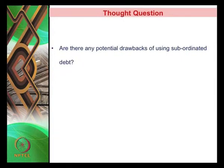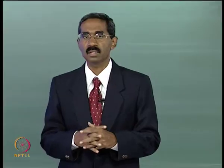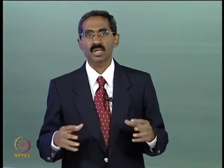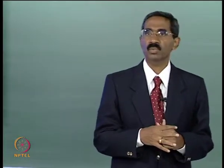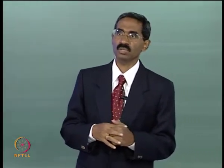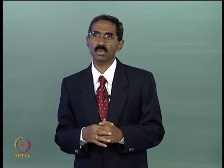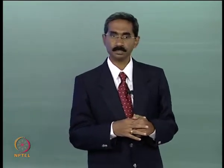What we did in the previous lecture is we looked at a specific form of debt which is called mezzanine debt or subordinated debt, and the question was: are there any potential drawbacks of using subordinated debt?